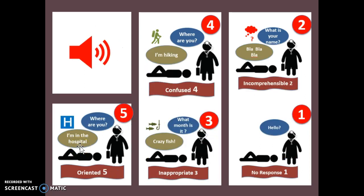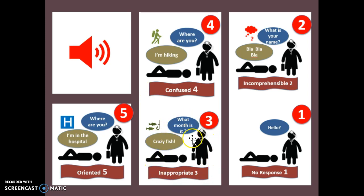Quick reminder for the verbal scores: 5 is an oriented response, 4 is a confused response, 3 is a random response, 2 is an incomprehensible response, and 1 is no response.